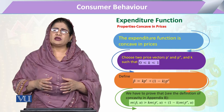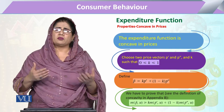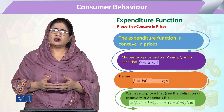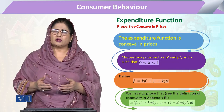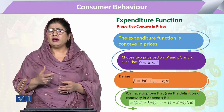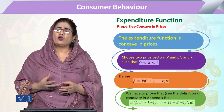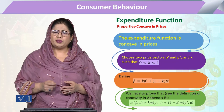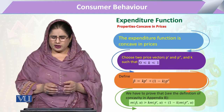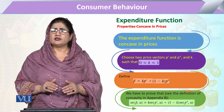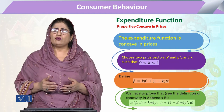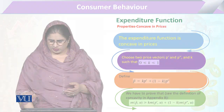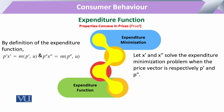As prices increase, expenditure increases. So if we want to minimize expenditure, we have to look at the minimum point and remain inward from there. The minimum amount of money required — the minimum expenditure function at P̄ when utility is kept constant — should be equal to or at least greater than the expenditure at both individual price points P prime and P double prime.